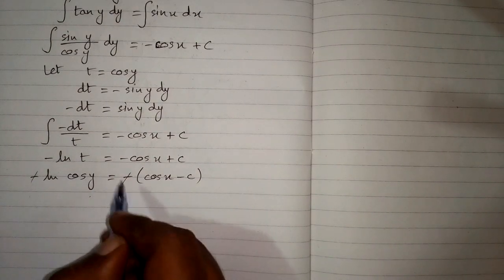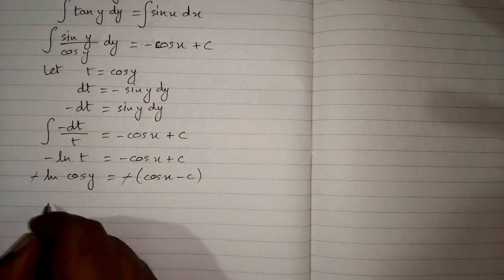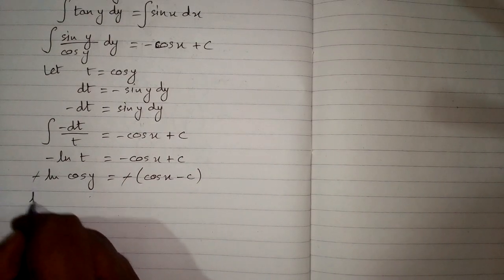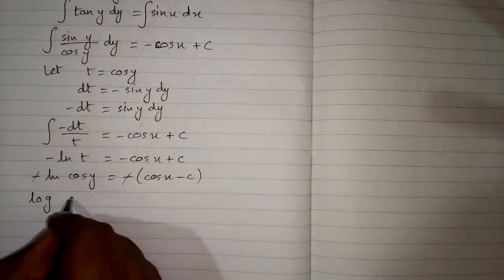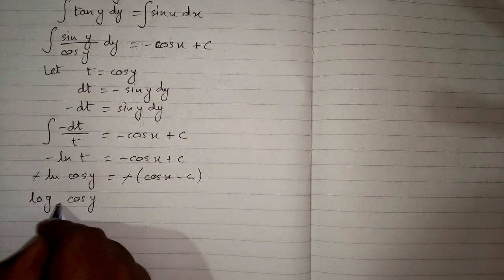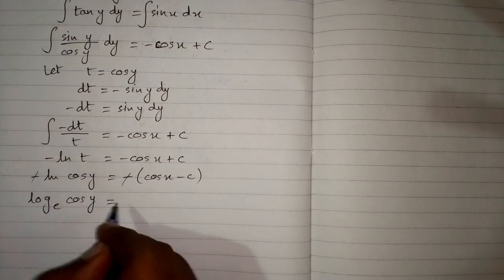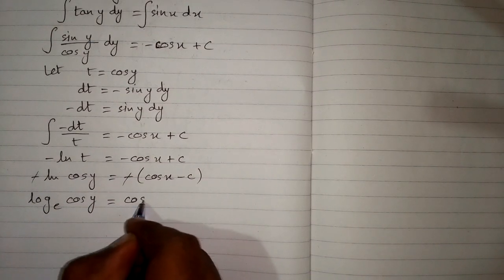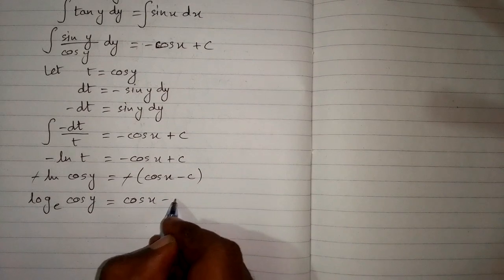Canceling the minus signs and substituting back t equals cos y, we get ln of cos y (base e) equals cos x minus c.